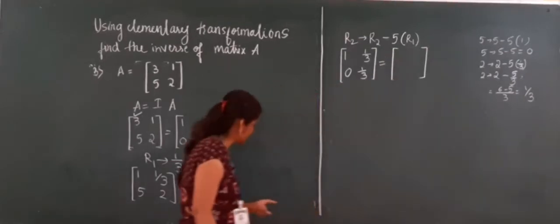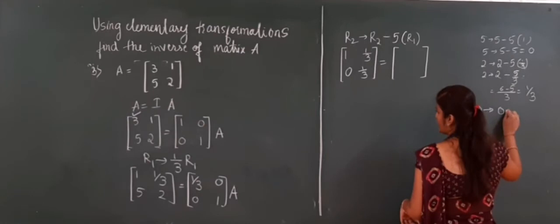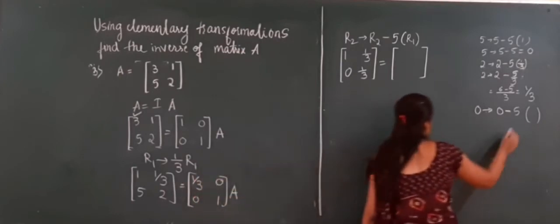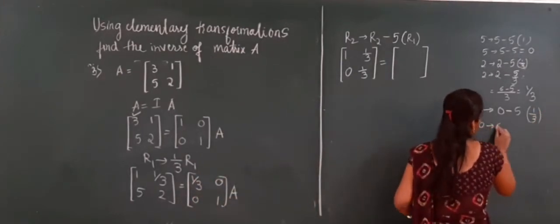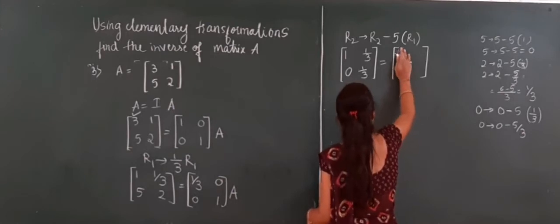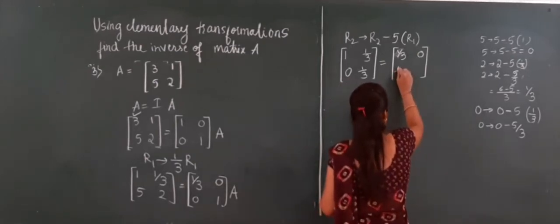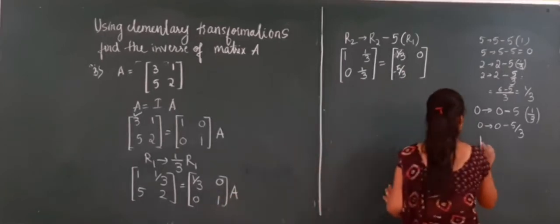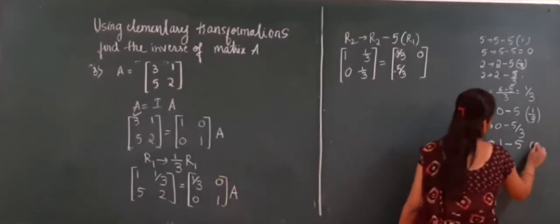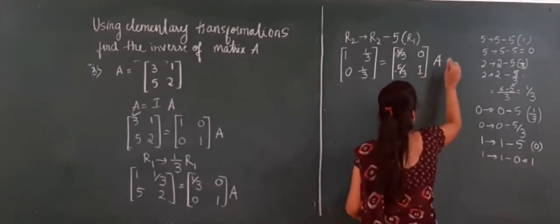I have to apply the operation to the identity side also. R2 changes: 0 changes to 0 minus 5×R1. The corresponding element is 1/3, so 0 minus 5/3 = -5/3. And 1 changes to 1 only. I will write R1 as it is, then write R2. R2: 1 changes to 1. I continue writing A as it is.